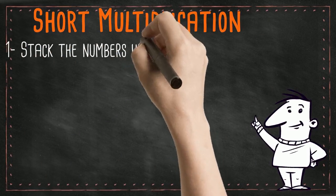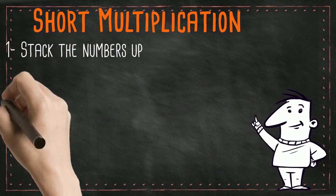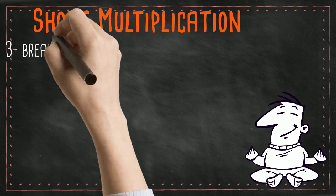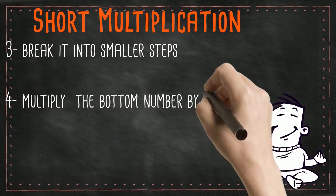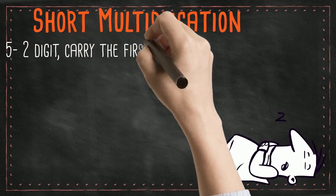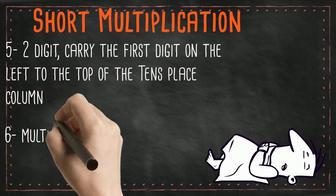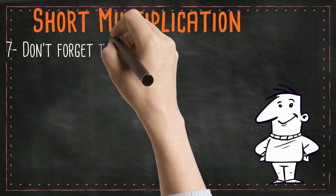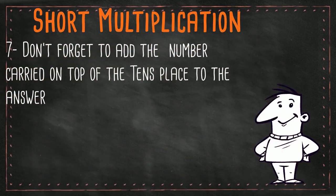Now let's review how to complete a short multiplication. First, stack the numbers up making sure the ones places are in one column and the tens places are in one column. Then break your bigger problem into smaller steps. Start by multiplying the bottom number by the digit on the top number starting from the ones place. If you get a two-digit answer, carry the first digit on the left to the top of the tens place column. Then multiply the bottom number by the tens place of the top number, and don't forget to add the carried number to your answer.